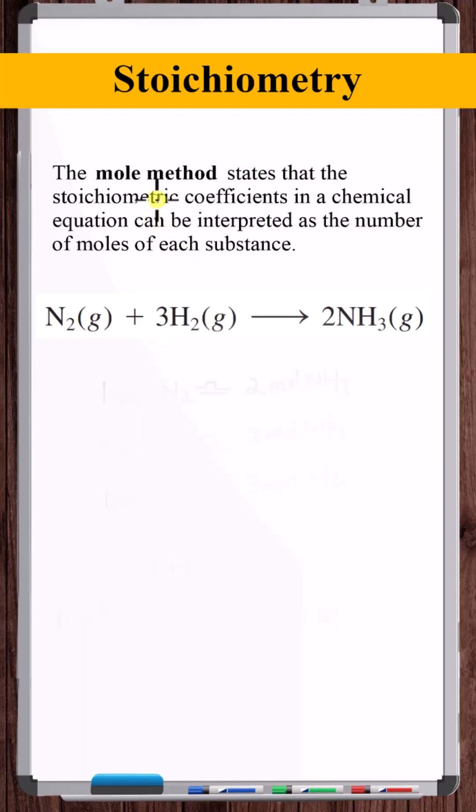To perform stoichiometry, we use the mole method, which states that the stoichiometric coefficients in a chemical equation can be interpreted as the number of moles of each substance. So it's completely valid to read this chemical equation as one mole of N2 reacts with three moles of H2 to produce two moles of NH3.